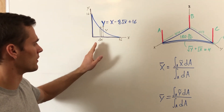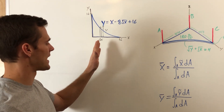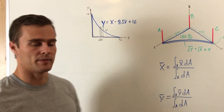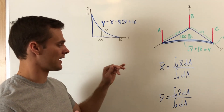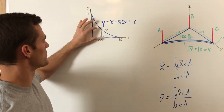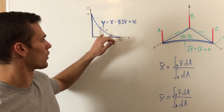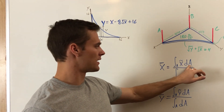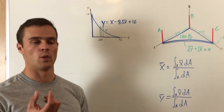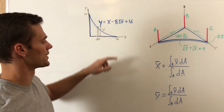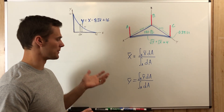We'll be integrating with respect to x, so we'll have vertical strips. x̃ is going to be the center of mass in the x direction of our little strip. Since this strip is infinitely thin, that center of mass in the x direction is just x. The center of mass in the y direction is just the middle of the strip, so y divided by 2. For dA, the width is dx and the height is y, so you plug in the function y for the height.